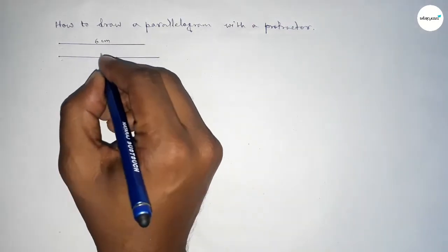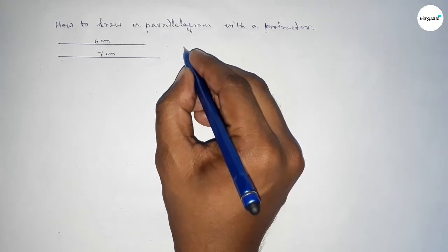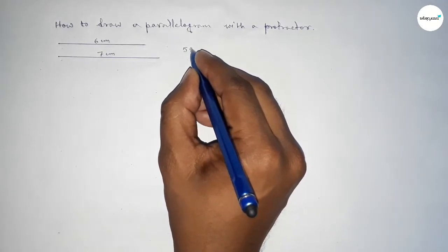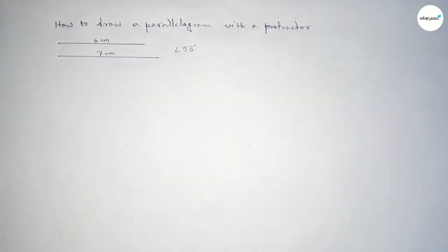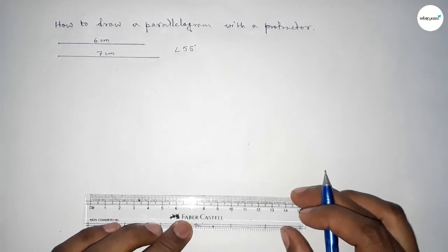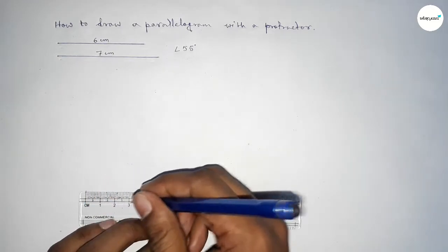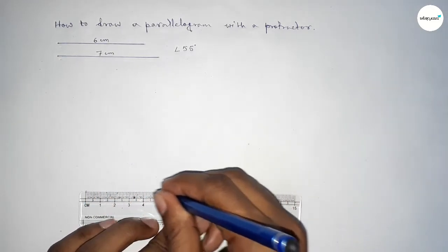So this one is 6 centimeters and this one is 7 centimeters, and taking here an angle of 55 degrees. First, we have to draw a line of length 7 centimeters.